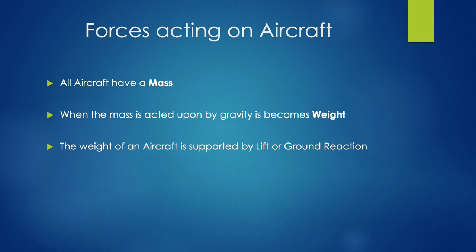Now we're going to look at some of the forces which act upon an aircraft. An aircraft has a mass — it weighs something. But once this mass is acted upon by gravity, it's no longer known as a mass; it becomes known as weight. So mass plus the gravity force equals weight. The weight of an aircraft is supported by its opposing force, which is lift, or something known as ground reaction.